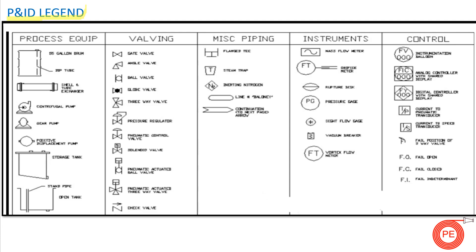To prepare a P&ID, there are some legends. The P&ID legend is used to prepare the P&ID because the P&ID has symbols, and in different plants symbols are standardized so that there is no confusion while reading a P&ID and everyone working in a plant has the same understanding. As you can see, this is the legend of a centrifugal pump — whenever you refer to a P&ID using this legend, the centrifugal pump will be shown like this. Similarly, this is the symbol of a gear pump.